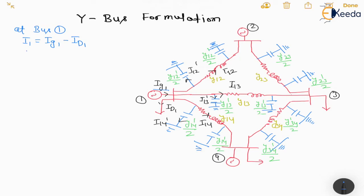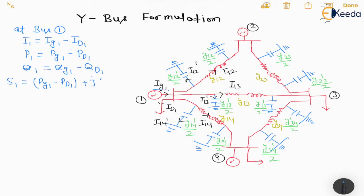Here, G is generation and D is demand — always remember these. So i1 is equal to ig1 minus id1. In the same way, P1 equals pg1 minus pd1, and Q1 equals qg1 minus qd1. This is the injected total power at bus number one, where we have both a generator and a load.